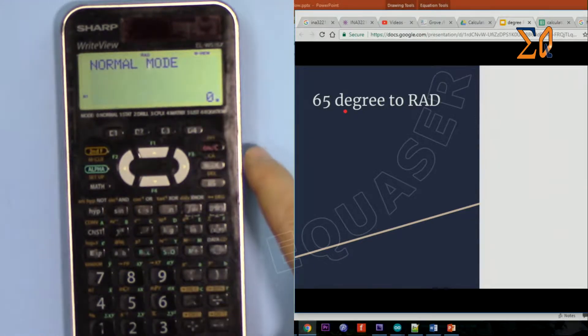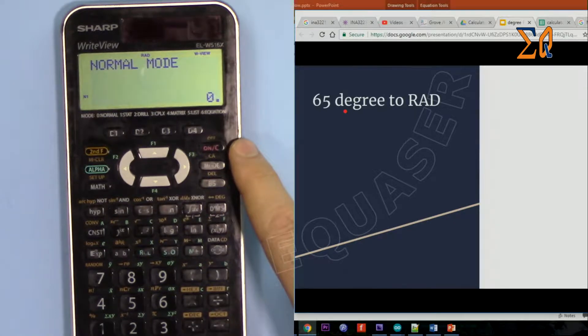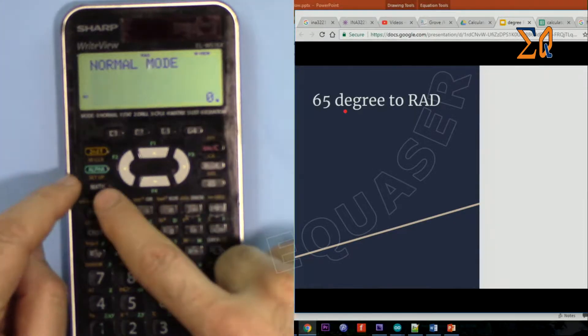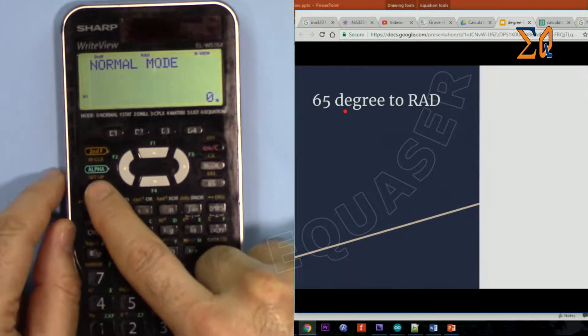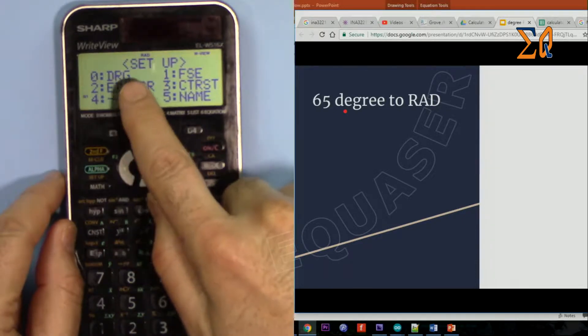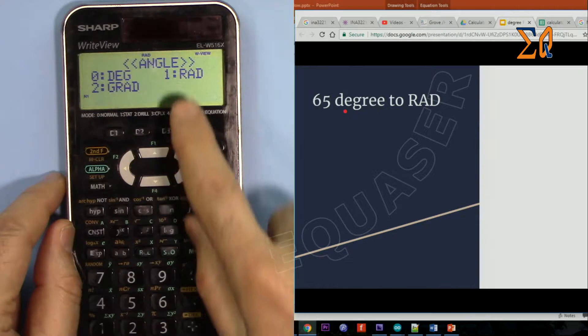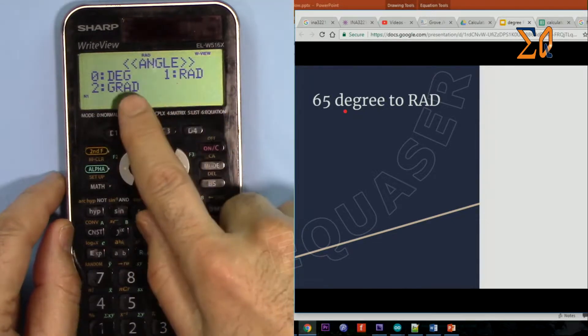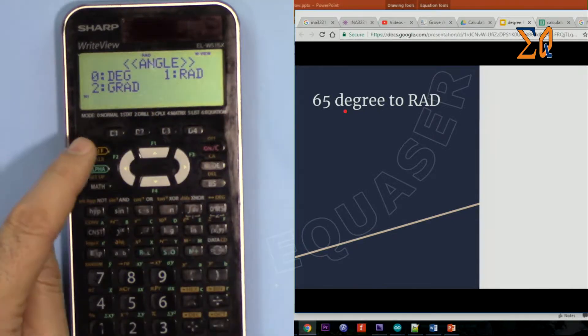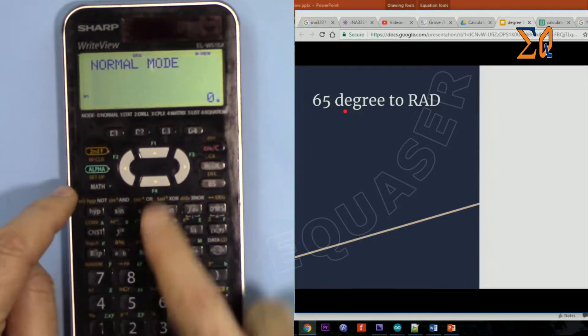So we press second function and then math, here DRG: degree, radian, gradient, 0. And here it says degree, radian, gradient. So this time 0, so second function, math, and zero, zero will bring it to degree.